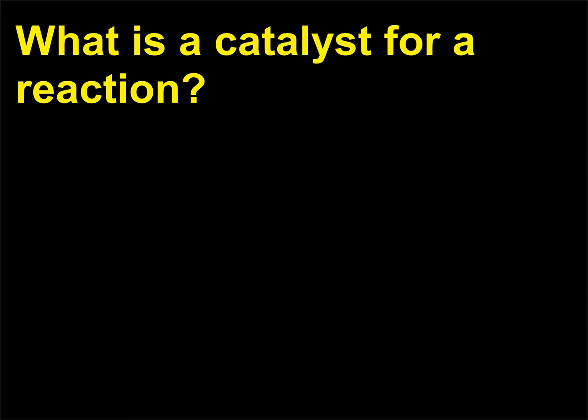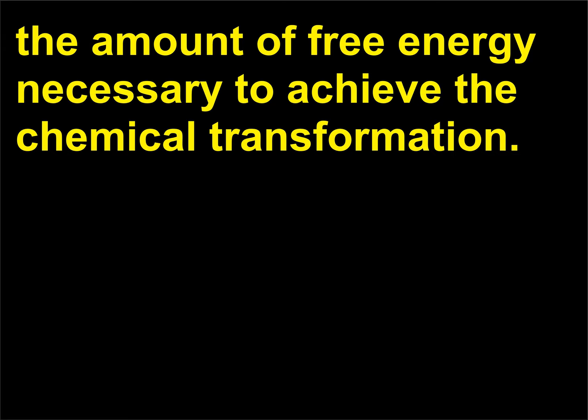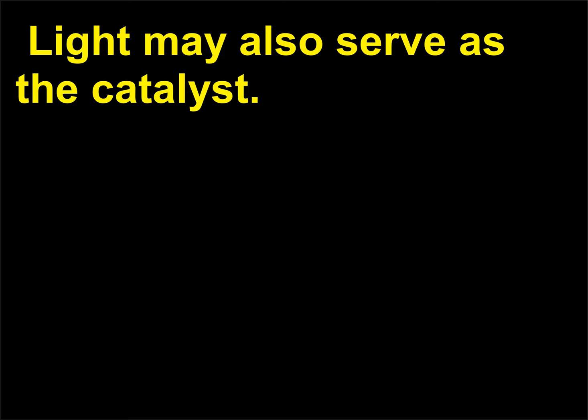What is a catalyst for a reaction? A catalyst for a chemical reaction is any chemical species that lowers the amount of free energy necessary to achieve the chemical transformation. This may involve a significant change in the mechanism by which the reaction takes place. Light may also serve as a catalyst.